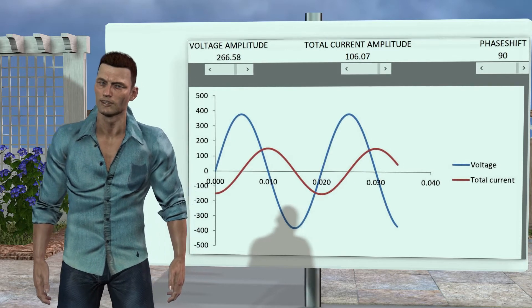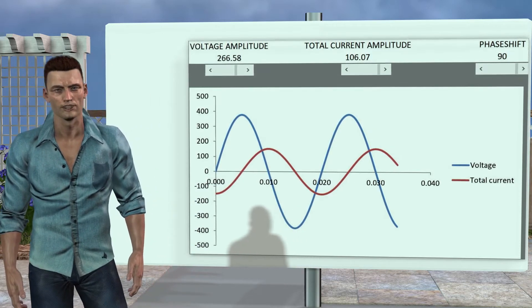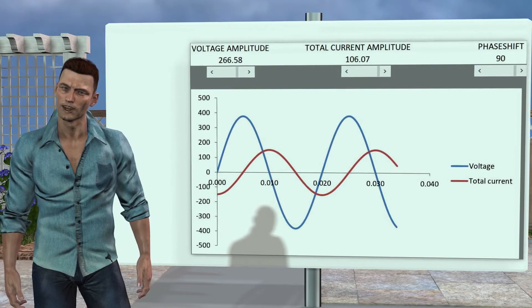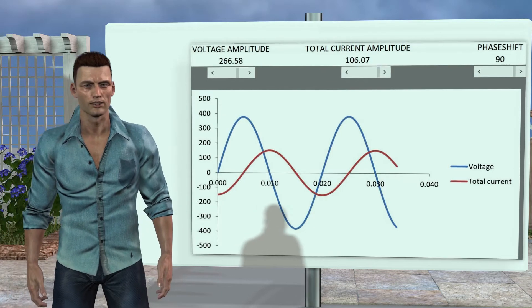In the case of an inductance, that is to say a coil, we see that the maximum of the current occurs a quarter of a cycle after the maximum of the voltage, so we say that in a coil the current lags behind the voltage.